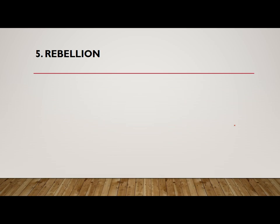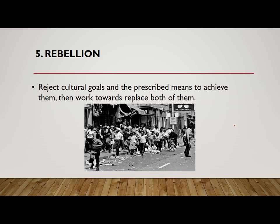The fifth and last way is rebellion. In rebellion, the person also rejects both the means and goals of society, but the key difference from retreatism is that they try to replace both of them. In retreatism the person has rejected both but is not trying to change the system, whereas in rebellion they are trying to completely change the system. We have seen this throughout history — whenever rebellion has happened, it has changed the system, its goals, and its means entirely.